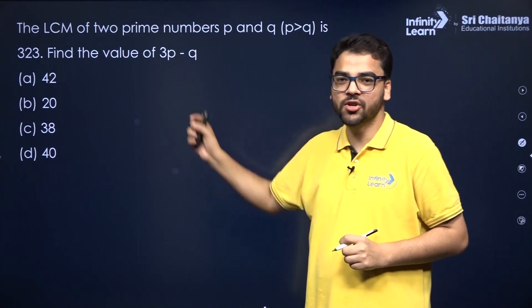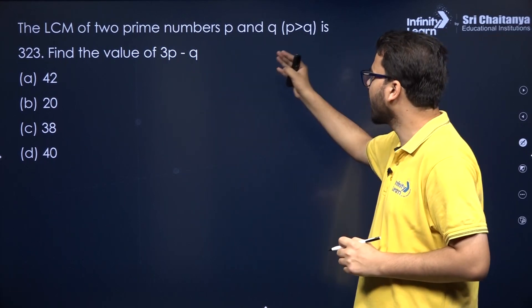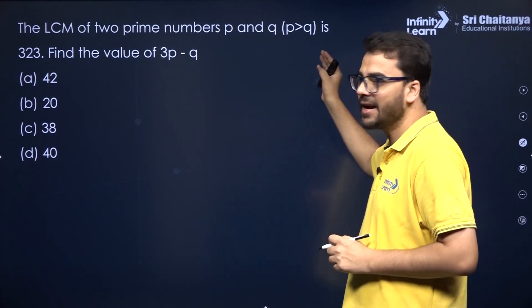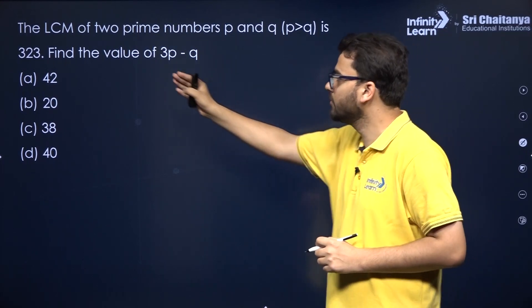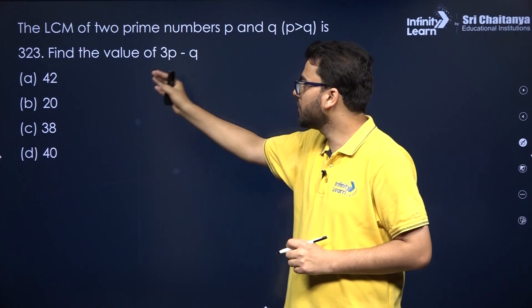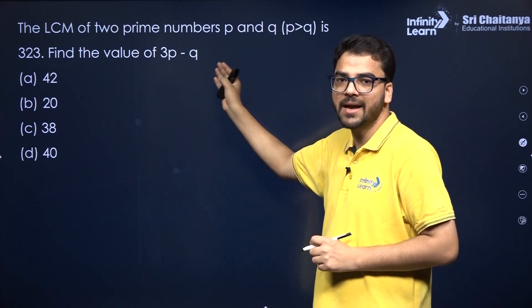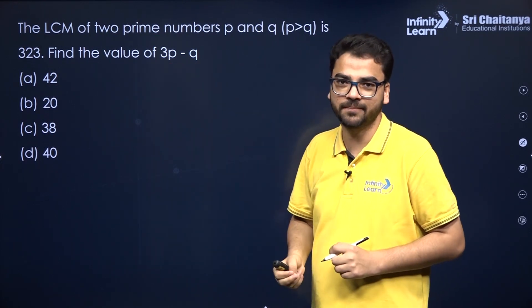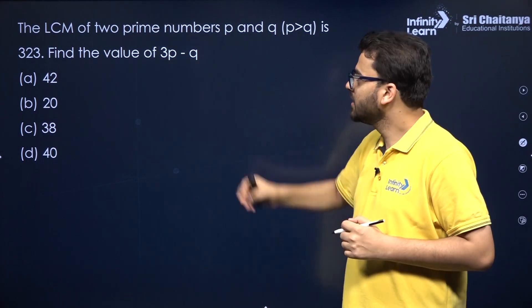The very first question is: the LCM of 2 prime numbers P and Q, where P is greater than Q, is 323. You have to find the value of 3P minus Q. So how will you do this?